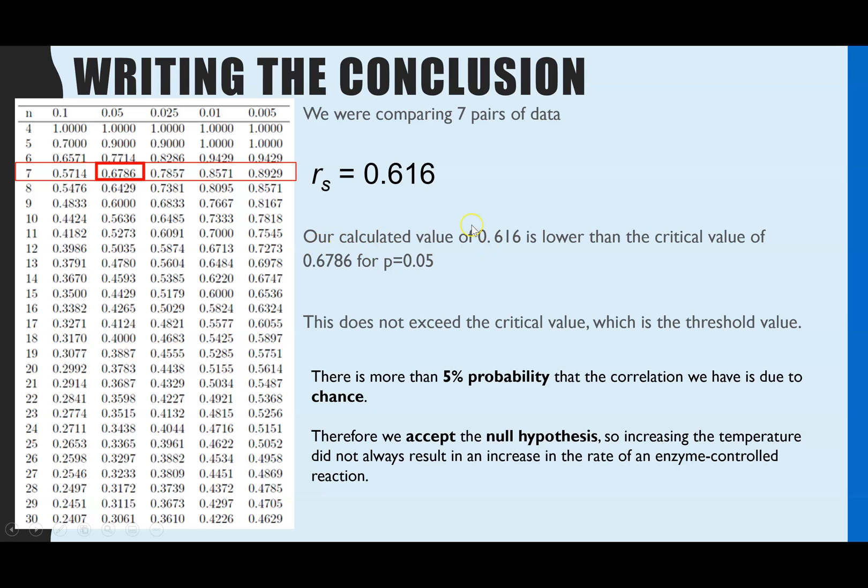So in our example, our calculated value of 0.616 is lower than the critical value of 0.6786, which was for the p-value of 0.05. So that doesn't exceed the critical value. That means we haven't reached or exceeded that threshold. So writing your conclusion then, you would include this statement here where you're showing that you have compared your calculated value to your critical. Then you need to say what that means. So in this case, that means we have more than 5% probability that the correlation we saw is due to chance. And because we have more than 5% probability, that means it's not significant. So we have to accept the null hypothesis. So increasing the temperature did not always result in an increase in the rate of enzyme controlled reaction. And we do not have a significant correlation.